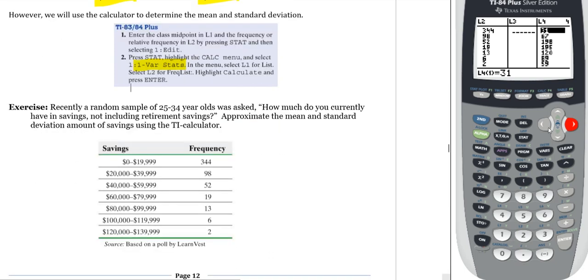Alright, so here, this first example. Recently, a random sample of 25 to 34 year olds was asked, how much do you currently have in savings, not including retirement savings? Approximate the mean and standard deviation amount of savings using the TI calculator. Okay, so we have this data presented here.